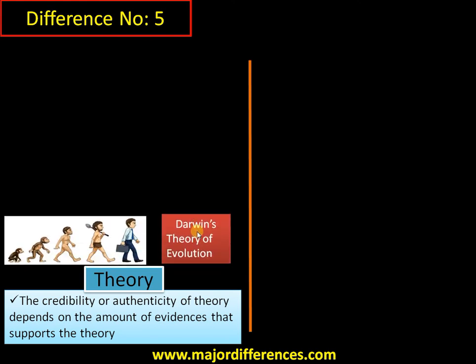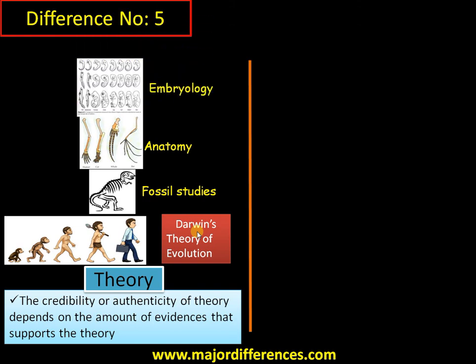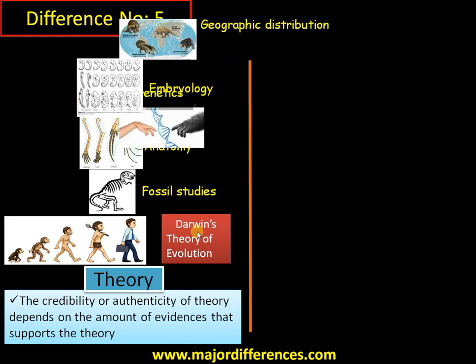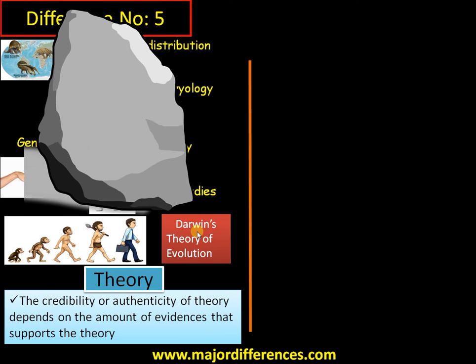Difference number five: the credibility of a theory depends on the amount of evidence supporting it. Darwin's theory of evolution is supported by massive evidence: fossil studies, comparative anatomy showing similarities and differences among organisms, embryological studies showing similarity across organisms, geographical distribution across different continents, and genetic studies. A theory must be supported by massive evidence, but there may still be missing links, loopholes, or things not yet scientifically proven. For the time being, it is the best possible explanation science can offer.